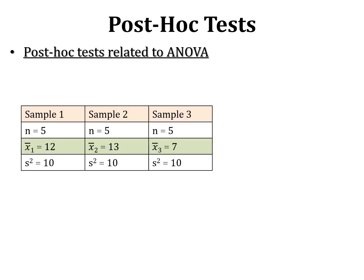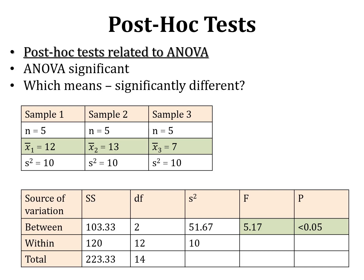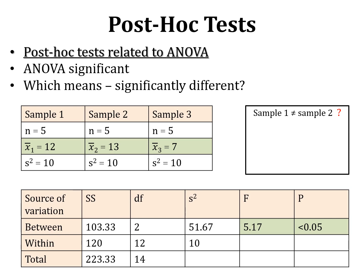For example, with three samples having means of 12, 13, and 7, ANOVA revealed a significant difference in means. But which means are significantly different? Samples one and two are not very different from each other, while sample three is quite different from both. We need to figure out: is the difference between samples one and two significant? Between one and three? Between two and three?